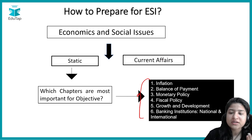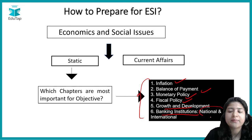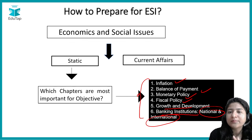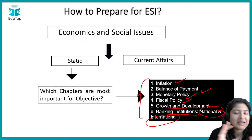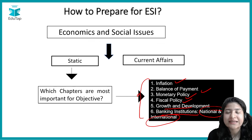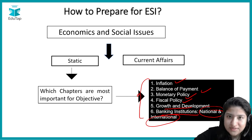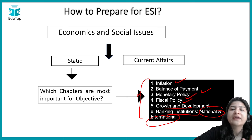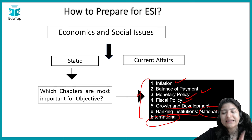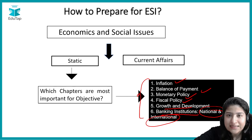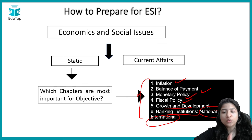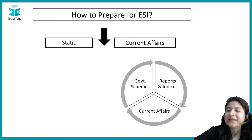The important static chapters to complete for Phase 1 ESI are: inflation, balance of payment, monetary policy, fiscal policy, growth and development, and banking institutions at the national and international level. Previous year question paper analysis shows that questions appear on these lines. Please keep in mind this entire video is regarding Phase 1 ESI, as Phase 2 comes afterwards.